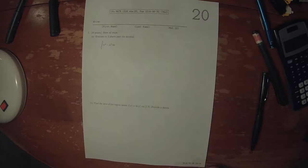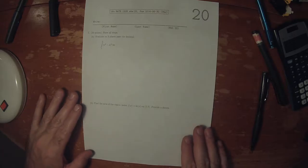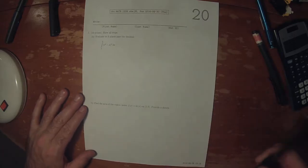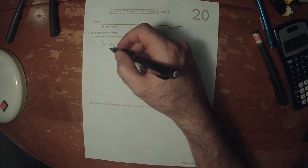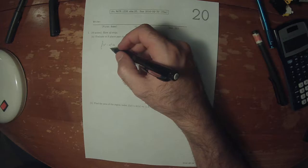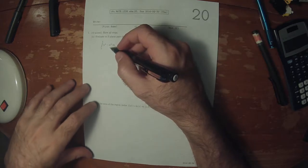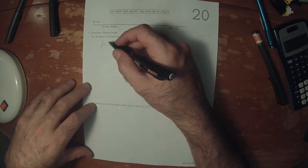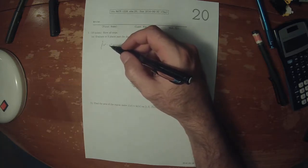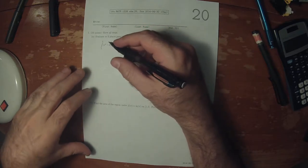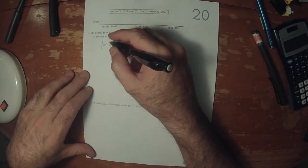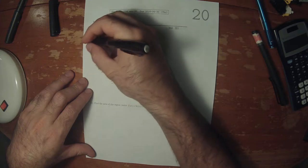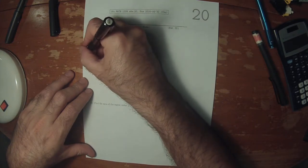For this integral we'd like to use the fundamental theorem, so we want to find an antiderivative of this. The best thing to do is to multiply this out first, so let's consider this antiderivative by itself.